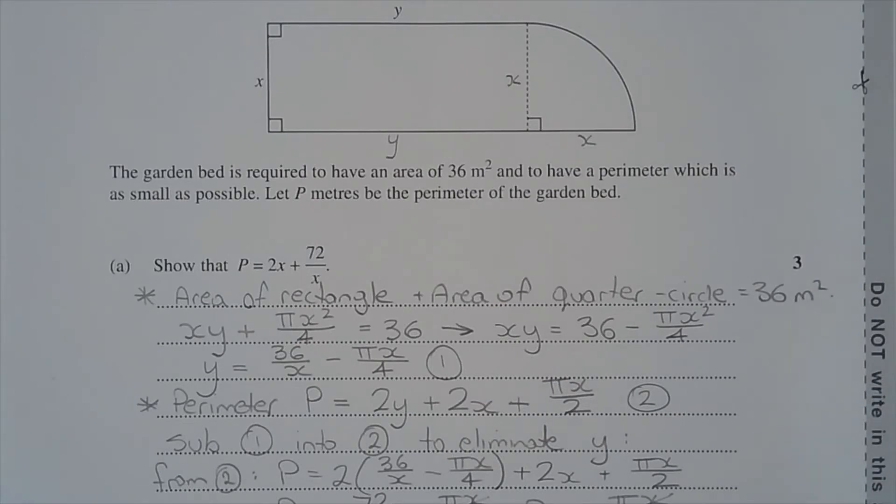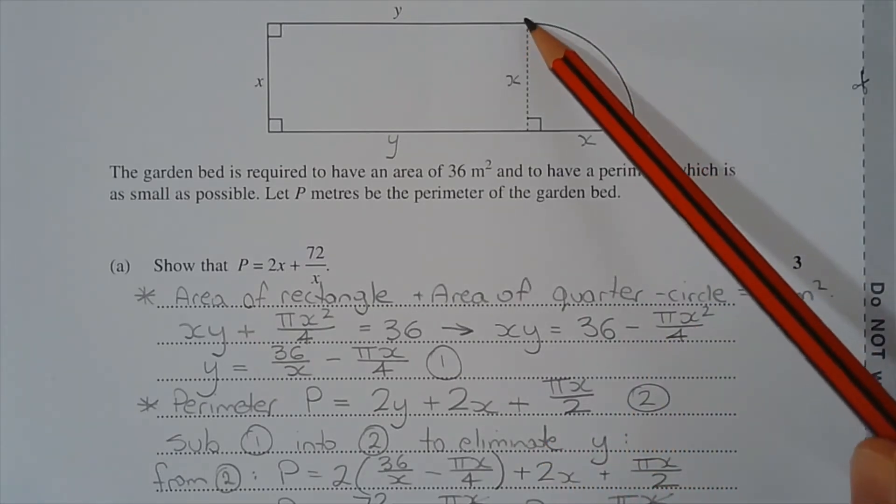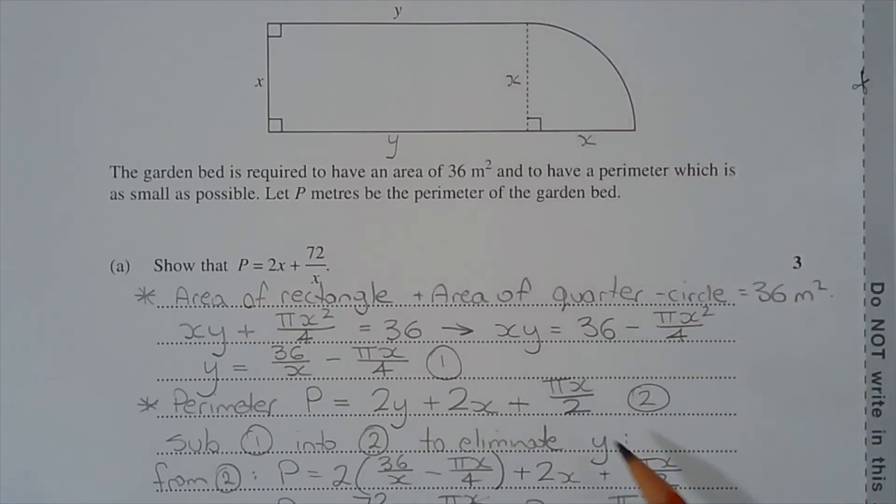We have the curved side here which is one quarter the circumference of a full circle, so that's 2π r or 2π x divided by 4. Hence why the perimeter here of the quarter circle is π x over 2, and we'll call that equation number 2.